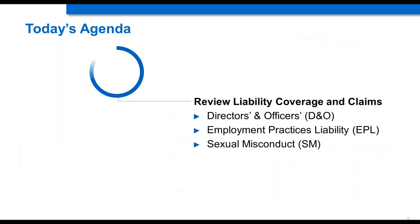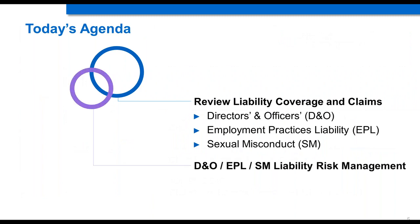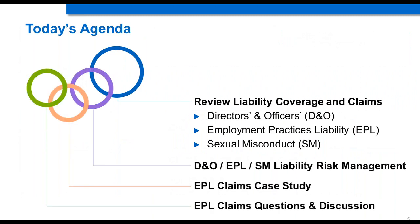Hello, everybody. Thank you for spending some time with us this afternoon. Today is our fourth and final episode of the Property and Casualty webinar. We have had great attendance and a lot of great questions in our first three webinars. Today, we look forward to covering liability, including directors and officers — known as DNO — employment practices liability, or EPL, and sexual misconduct liability, acronym SM. We will run through the coverages, and at the end, we'll get into a claims case study with my colleague Ken Miller from our claims team.